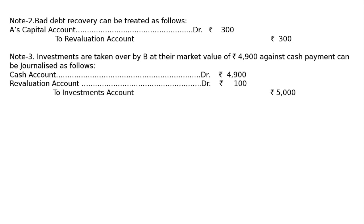Investment — Note 3 — this is also an important adjustment. Investments are taken over by B at their market value of ₹4,900 against cash payment. If B was not paying, we'd write: B's capital account debited ₹4,900, revaluation account debited ₹100, to investment account ₹5,000. But since B is paying cash, it is a direct cash transaction. So: cash account debited ₹4,900, revaluation account debited ₹100, to investment account ₹5,000. Investment will not appear in the new balance sheet.